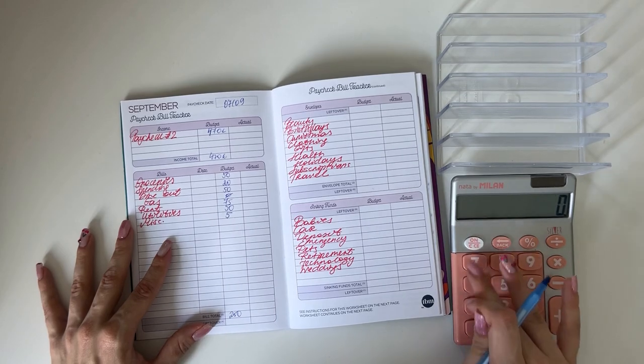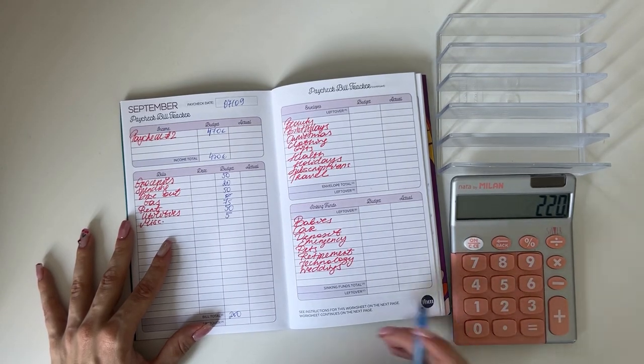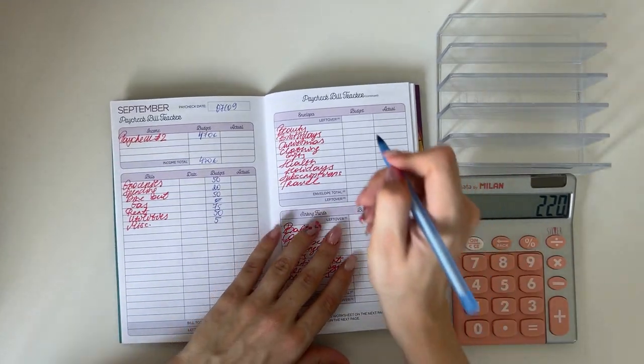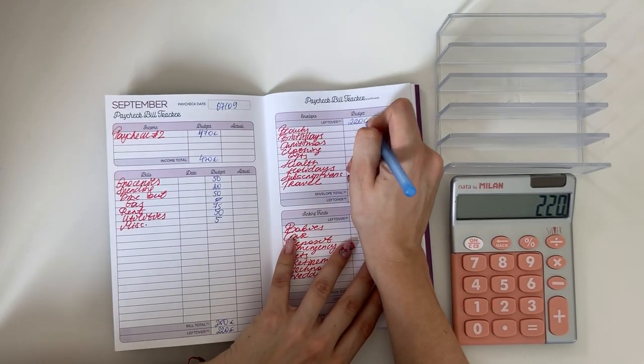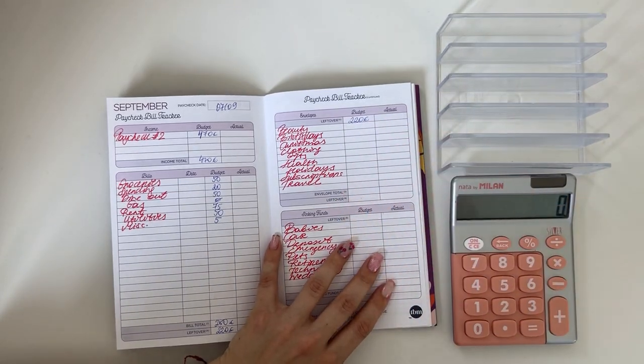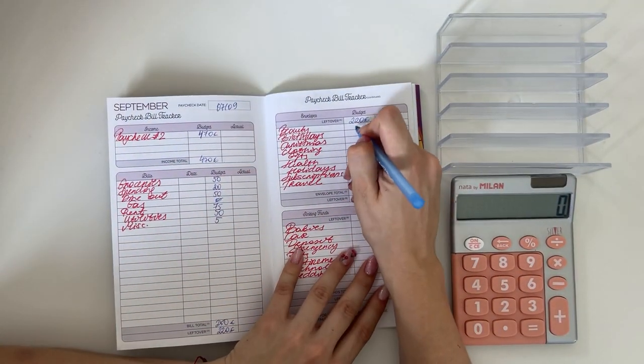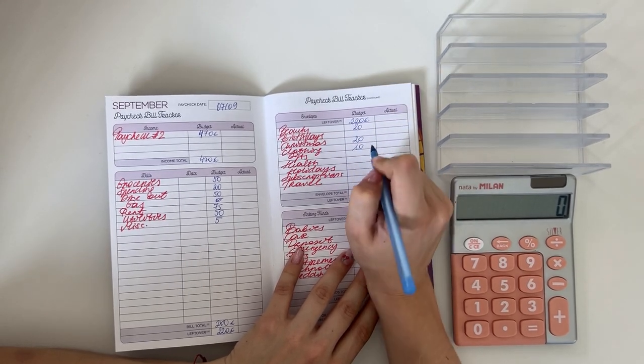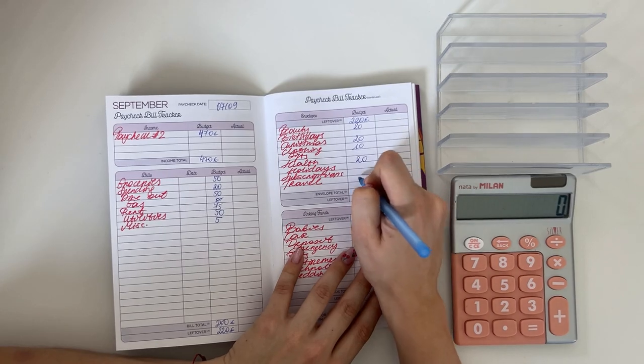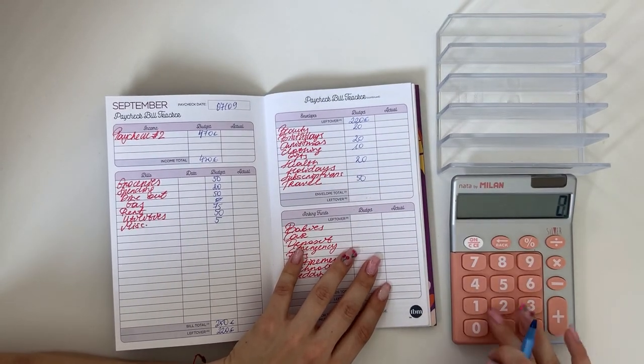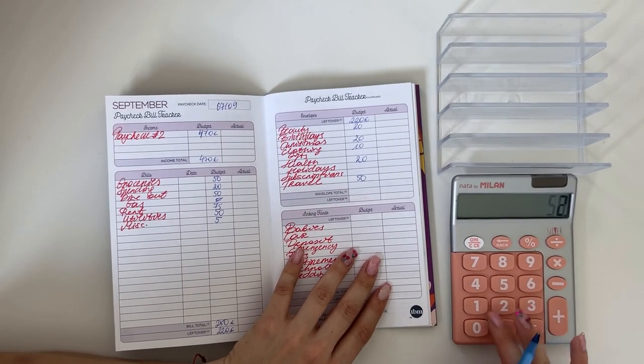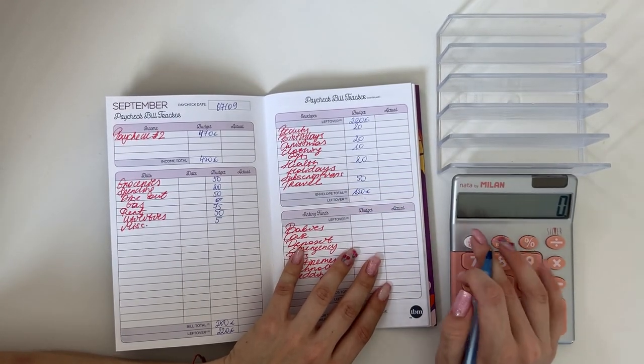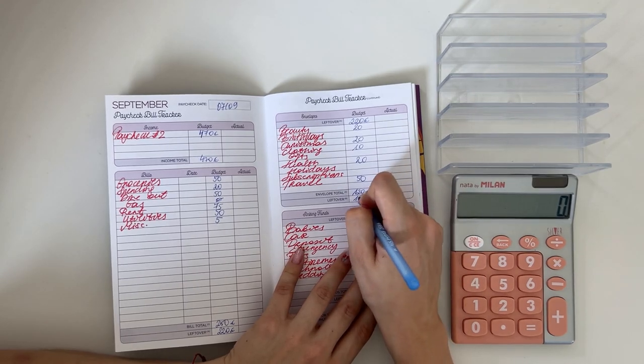470 minus 250 is 220. So 220 I'm bringing up here to short-term sinking funds. Putting 20 in beauty, 20 in Christmas, 10 in clothing, 20 in health, and 50 in travel. That's 120 going into short-term sinking funds. So 220 minus 120 is 100.